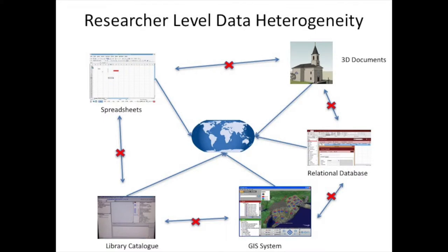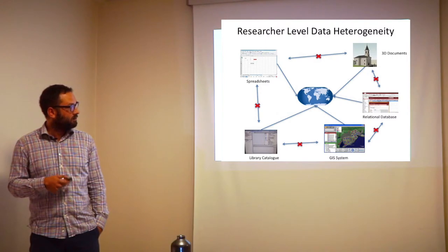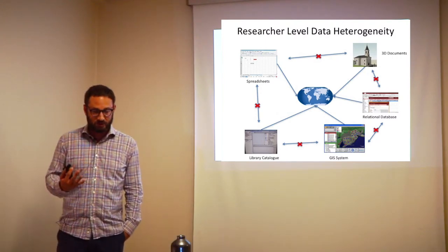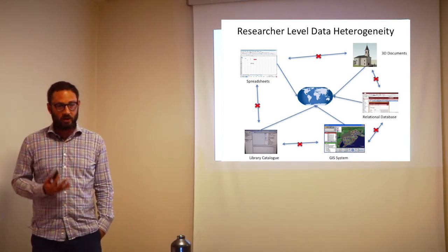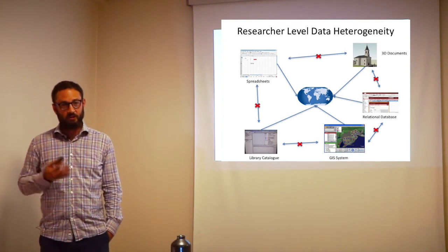How does that look in reality? At an individual researcher level, we have some topic of study — a world we want to investigate. It's a pretty normal scenario now that you would find pre-existing data you want to reuse, expressed in a spreadsheet, a library catalogue, a GIS system describing spatial elements. You might have created your own relational database, and increasingly people create 3D documentation. All of these things could be talking about the same world, but unless we figure out some way of standardizing and harmonizing data across these different forms, we're unable to get the most efficient recall out of this data — both individually and when sharing with other researchers into the future.